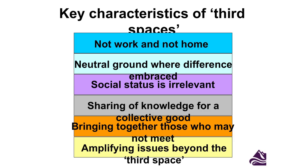The basic characteristics of third space are that they're not work and they're not home — they're neutral spaces where people can feel welcome: pubs, galleries, libraries, the park. Difference is embraced in third space; what people bring in is respected, but status doesn't really count — social status is irrelevant. Knowledge is shared for a collective good. Two aspects relate particularly to digitally enhanced higher education: third space can bring together people who wouldn't otherwise meet, and digital third spaces, where people cluster around shared interests, can help amplify issues beyond that third space and take them out into other groups and areas of society.